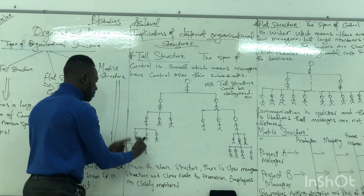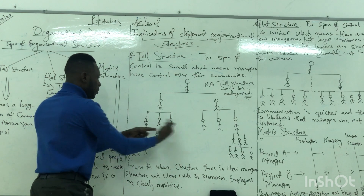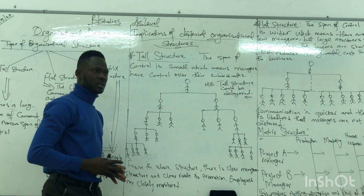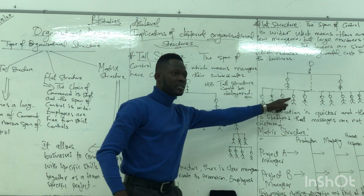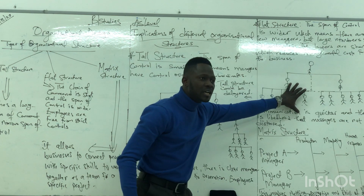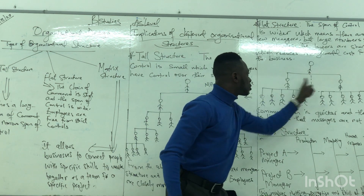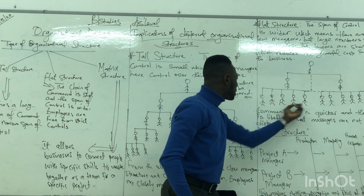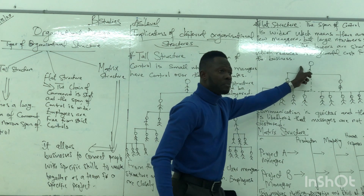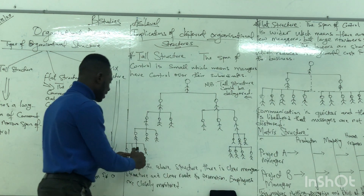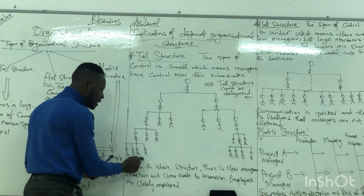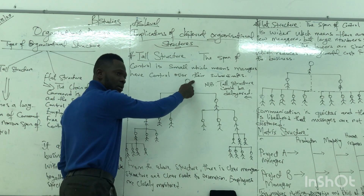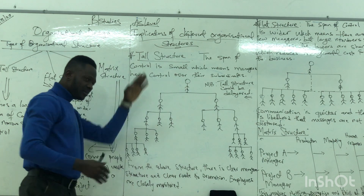In a tall structure, it is difficult for the director to link with subordinates directly — communication has to go through this level, then this level, then this level, before reaching the top. So in the tall structure, communication can be distorted because it has a long chain of information. Just imagine how communication has to pass through all those levels. In the flat structure, it is easier because you only have to talk to one person directly.